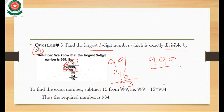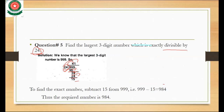24 times 1 is 24. Subtracting 39 minus 24: 9 minus 4 is 5 and 3 minus 2 is 1, giving 15. To find the exact largest number, subtract 15 from 999: 999 minus 15 is 984. So 984 is the largest three-digit number exactly divisible by 24.